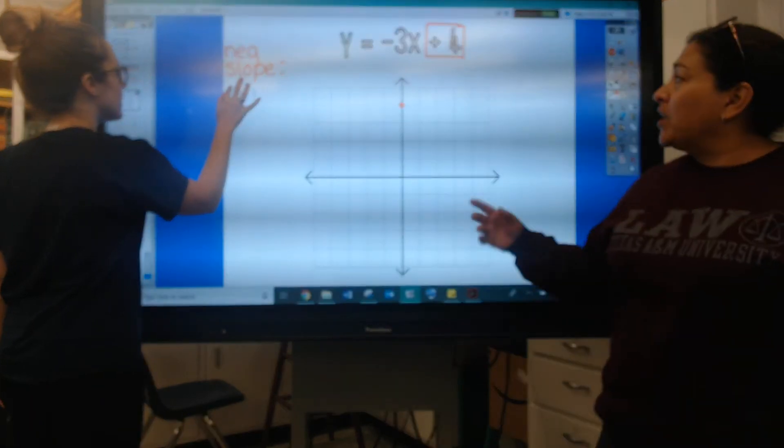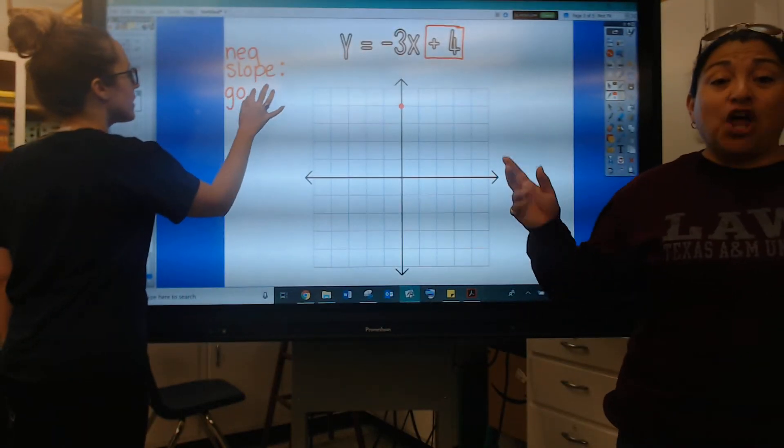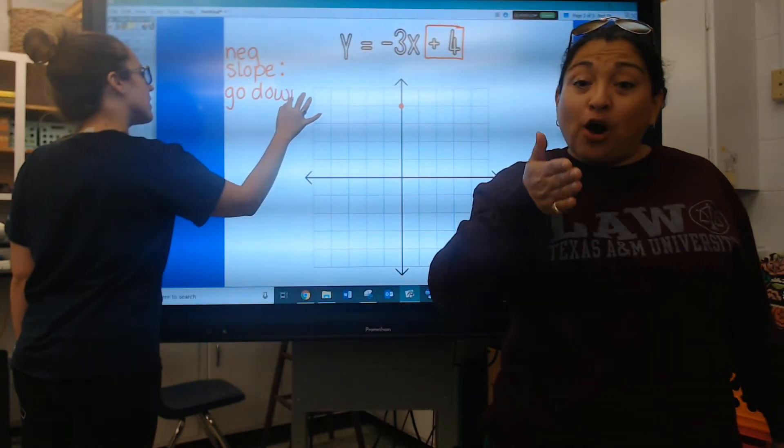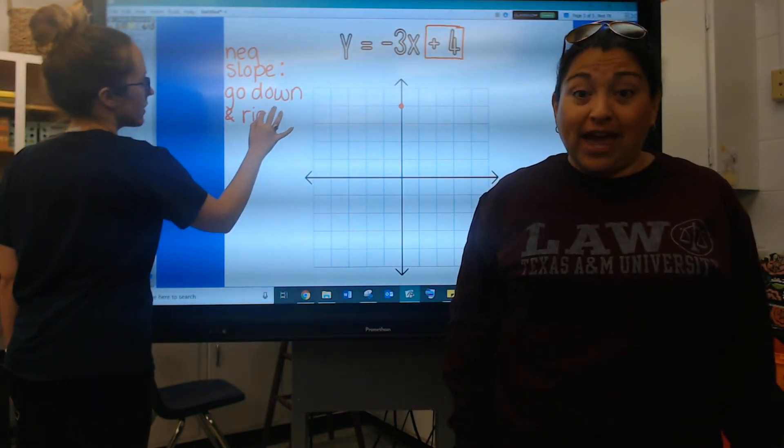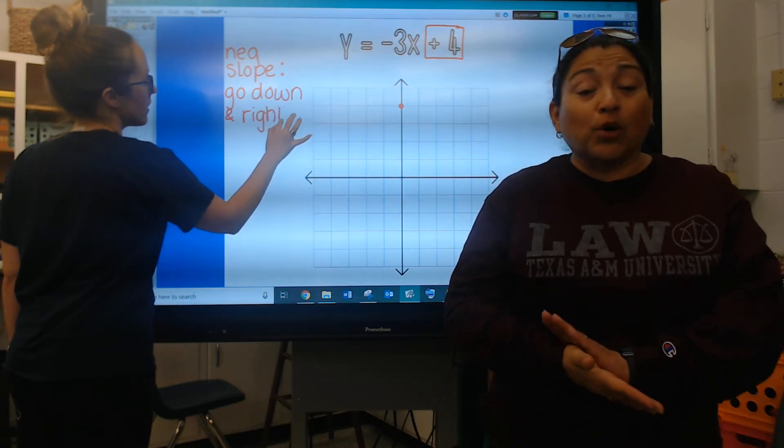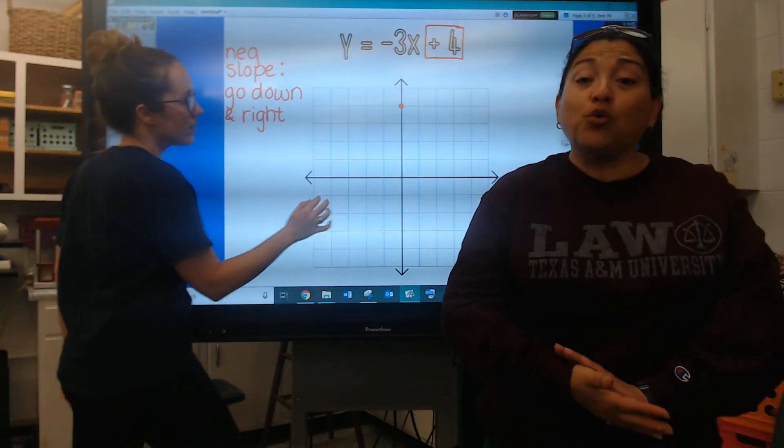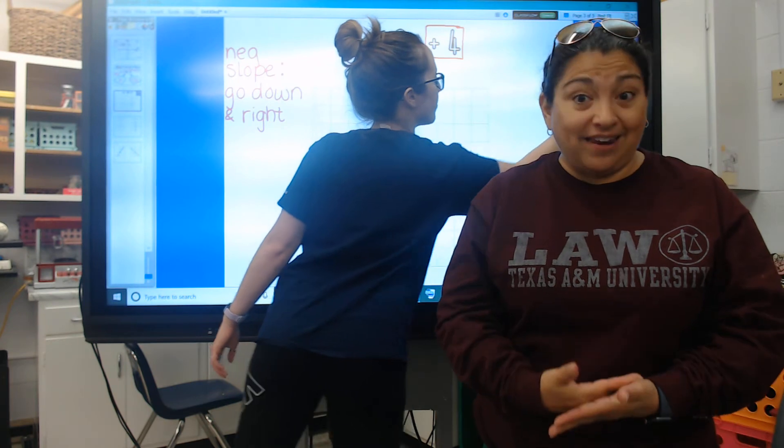But what we're going to do is when you have a negative slope you're always going to be counting down first then you're going to be going right. Okay but you always have to remember check it before you write an answer because you've got to put that negative in there.